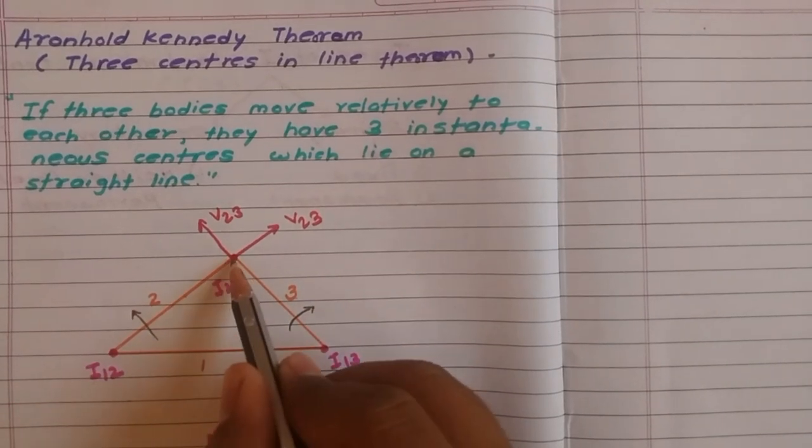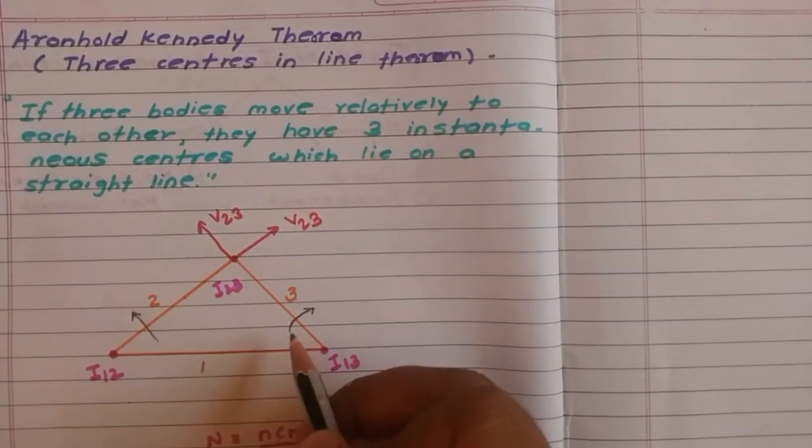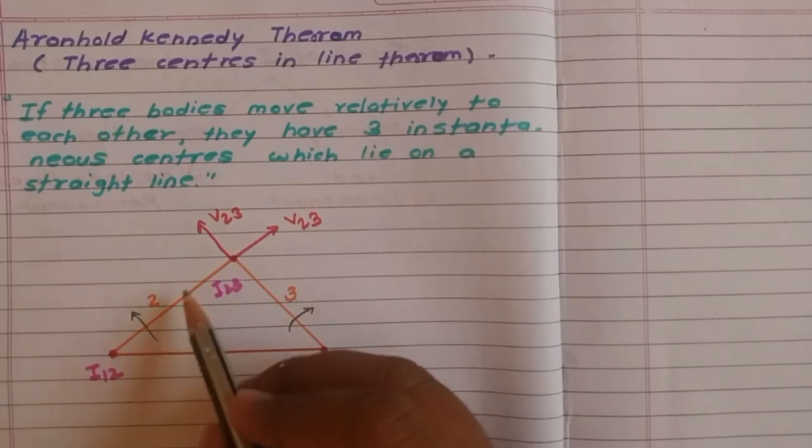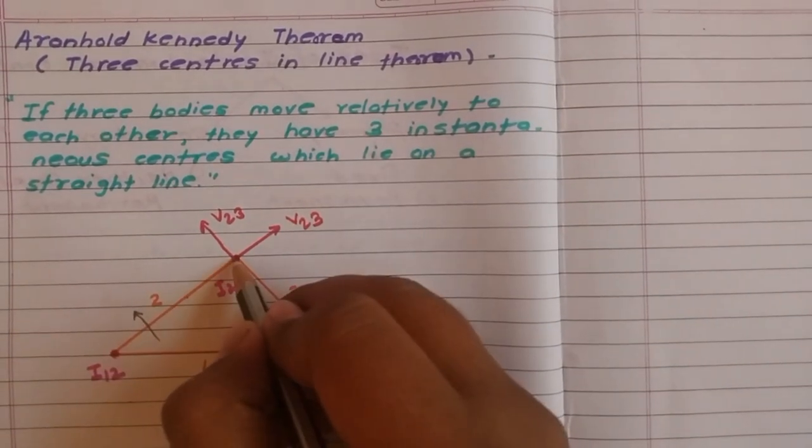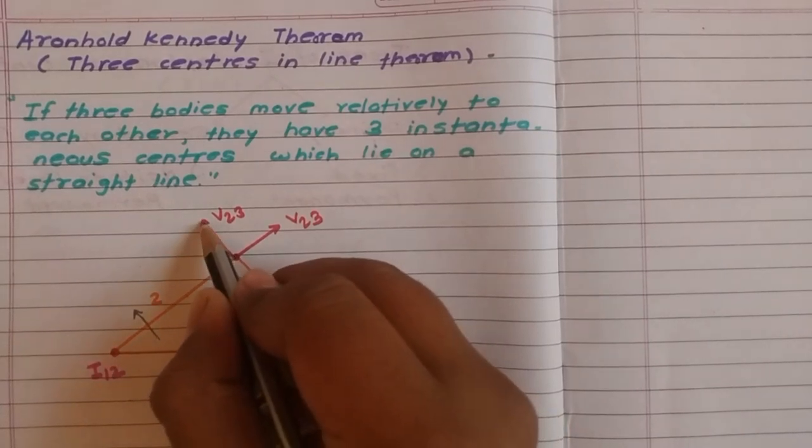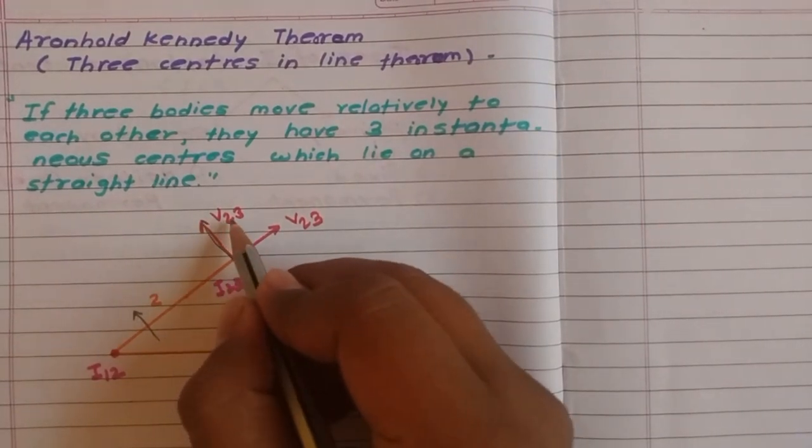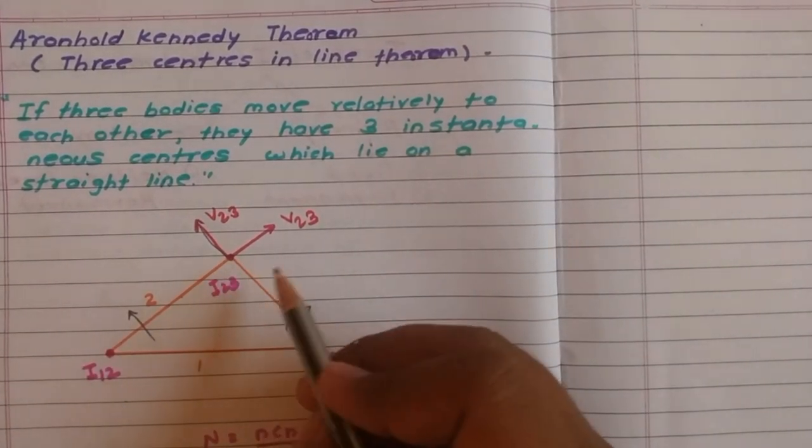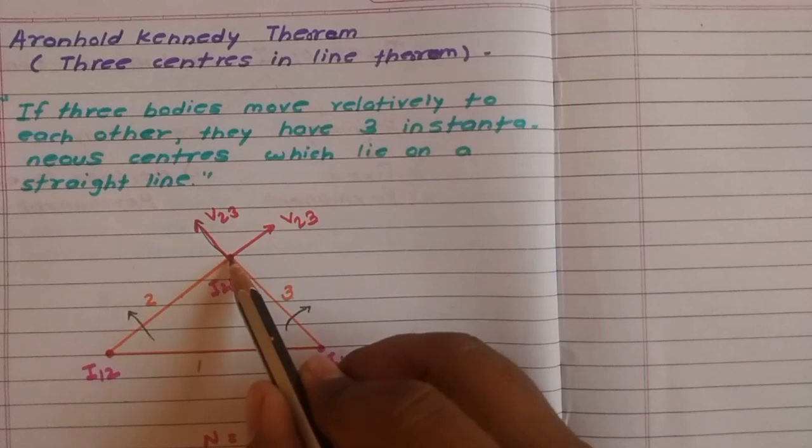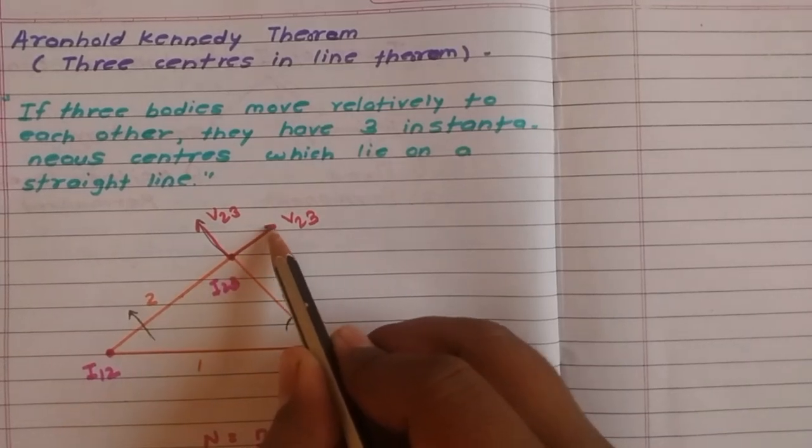I23 is lying on both 2 and 3. Suppose this point is on 2. Then velocity of 2 will be perpendicular to this link number 2, V23. This point is lying on link number 3, then velocity of this link will be perpendicular to 3.